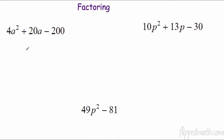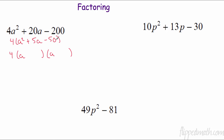Let's go over some factoring. Remember the first thing you look for is a greatest common factor. For 4, 20, and 200 — yes, I can take a 4 out. So now it's going to be a² plus 5a minus 50. Now I factor what's left, keeping my 4 on the outside. I need two numbers that multiply to negative 50 and add to positive 5 — that's 10 and negative 5. Check for any common factors in the new binomials — there are none, so we're done.